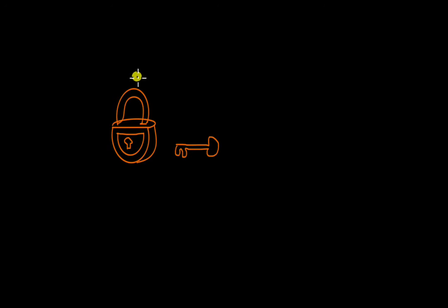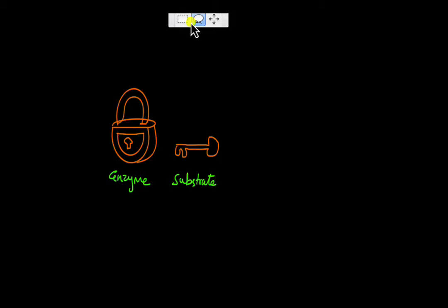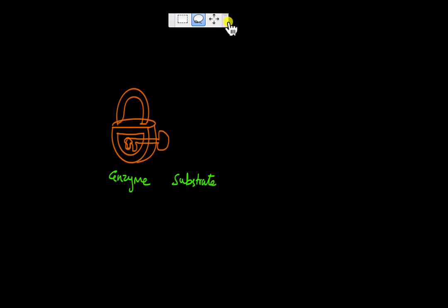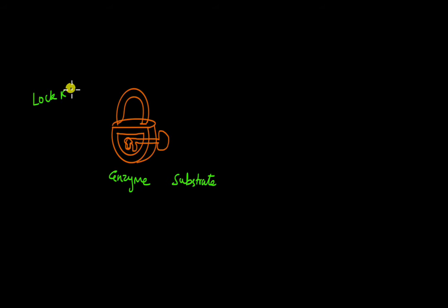Suppose there is an enzyme represented by this lock, and the key over here represents the substrate that the enzyme is going to catalyze. According to the lock and key model of enzymatic reactions, the substrate is going to fit the enzyme like how a key would fit a lock. This would then lead to the reaction — the substrate being converted into a product. That is what the lock and key model describes.